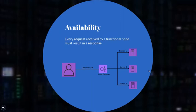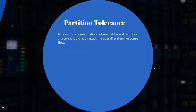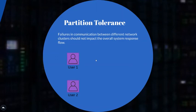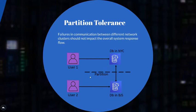Let's move on to the next property in CAP, which is P, and P is for partition tolerance. By this we mean that if a large scale system is divided into network partitions, then failure in communication between or within the network partitions should not cause overall failure in the system. For example, if user1 is talking to a NYCDB node and user2 is talking to a BJSDB node, and the network between NYC and BJS goes down, user1 and user2 should still be able to talk to their local DB nodes even when the two nodes are not talking to each other.